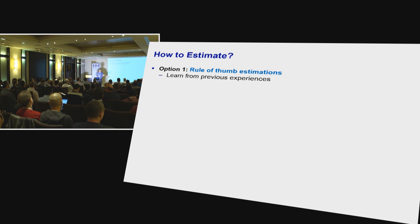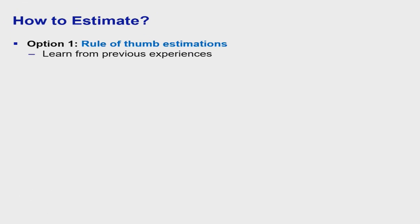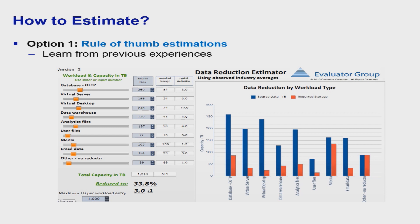How to estimate. So there's really two options to go here. The first one, which we will not follow, but I'll mention, is just rule of thumb estimations. Like I told you, we can learn from prior experience. We know that some stuff has great data reduction and some does not. So, for example, here's a website called Data Reduction Estimator from Evaluator Group. You can Google it, you'll find it. And what they'll do is they'll say, databases, they typically have a reduction of three to one. How much database data do you have, for virtual desktops, et cetera. And then they'll sum up so you can have an estimation of how much you're gaining.